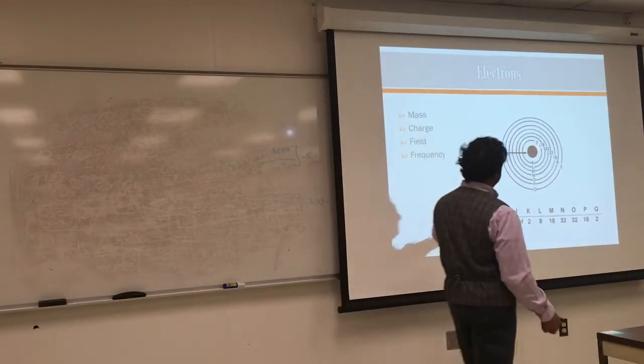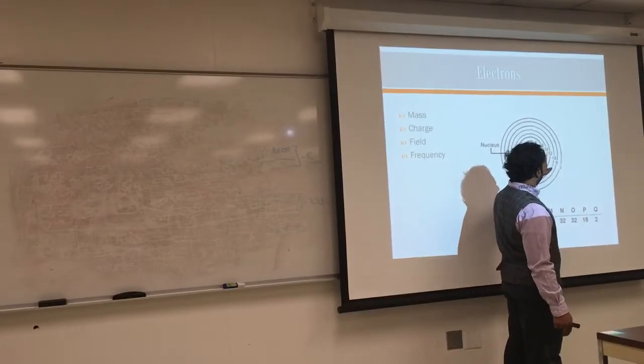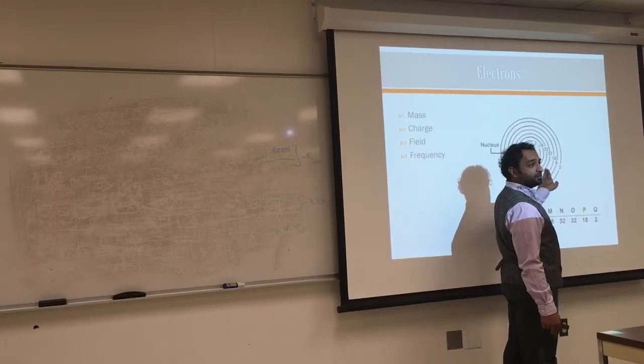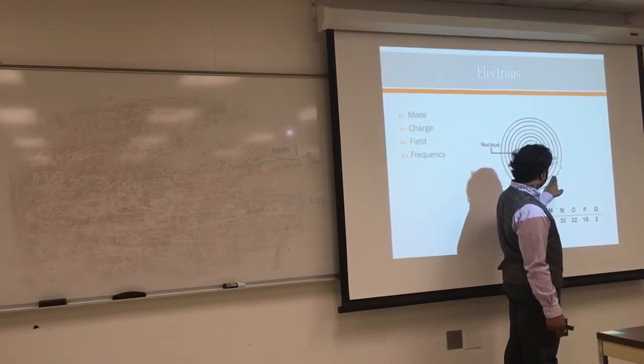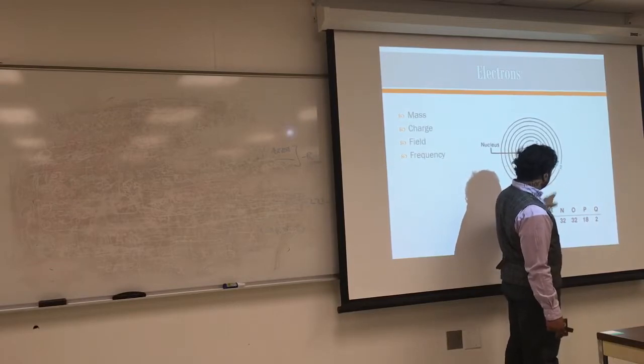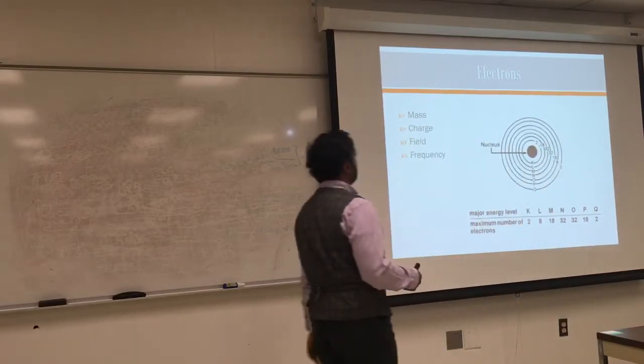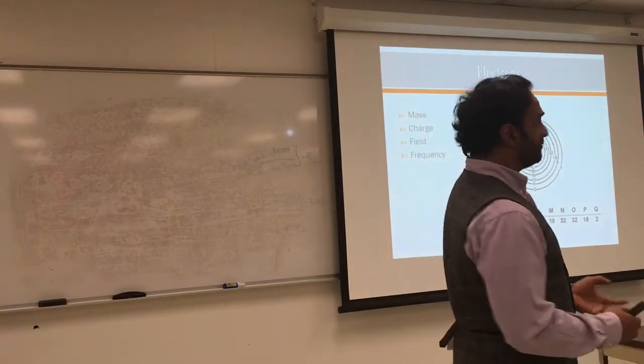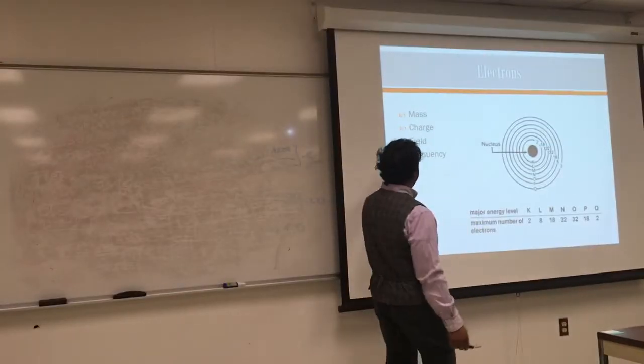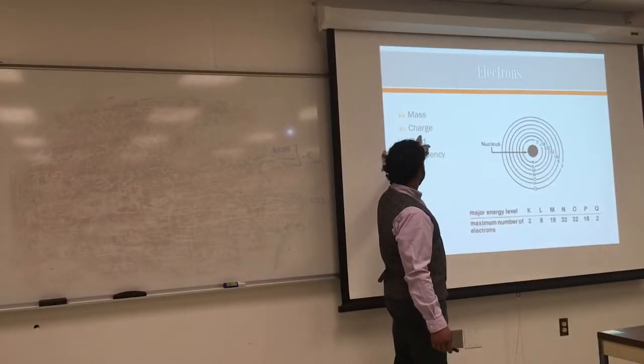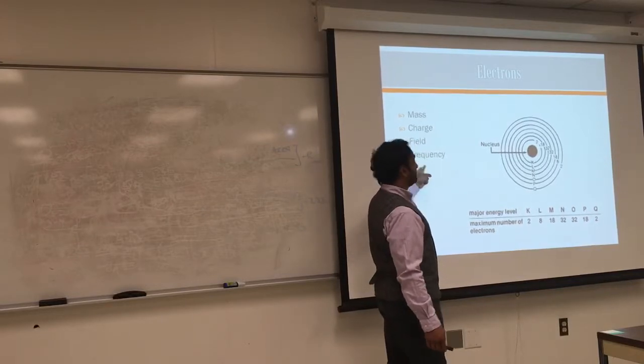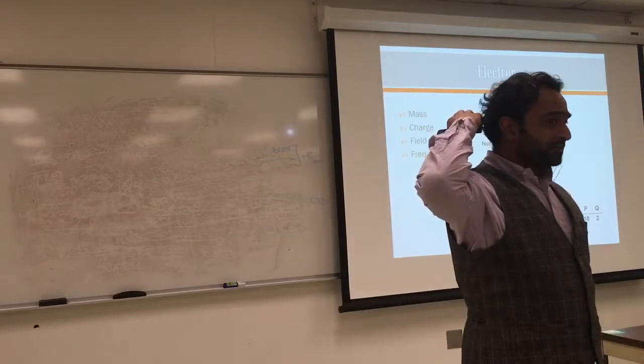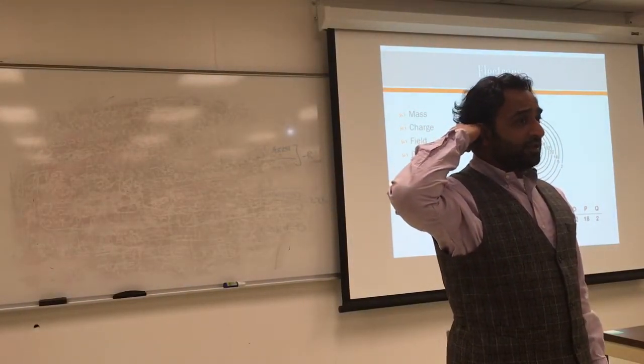These are the orbits. The first orbit takes two. The second orbit takes eight. And so on. Everyone has a limit of how much it can contain. And every nucleus has mass, has charge, has a field, and has frequency. What is the frequency? How much does it vibrate? Think of energy again.